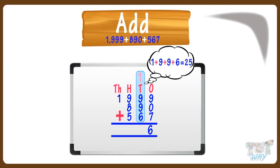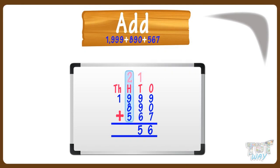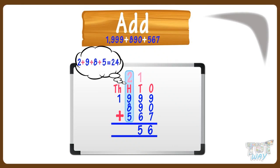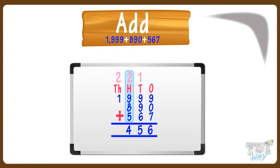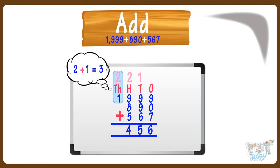Again, the sum is a two-digit number, so write 5 in the answer below, and carry over to hundreds place. Now, add the hundreds place digits. 2 plus 9 plus 8 plus 5, we get 24. So, write 4 in the answer below, and carry over to thousands place. Now, add the thousands place digits. 2 plus 1 equals 3. Write 3 in the answer at the thousands place.